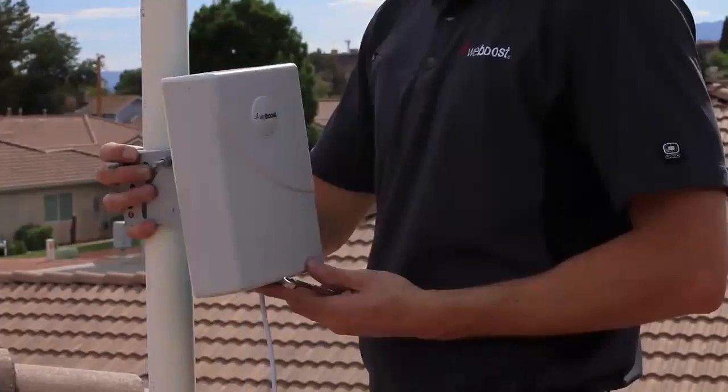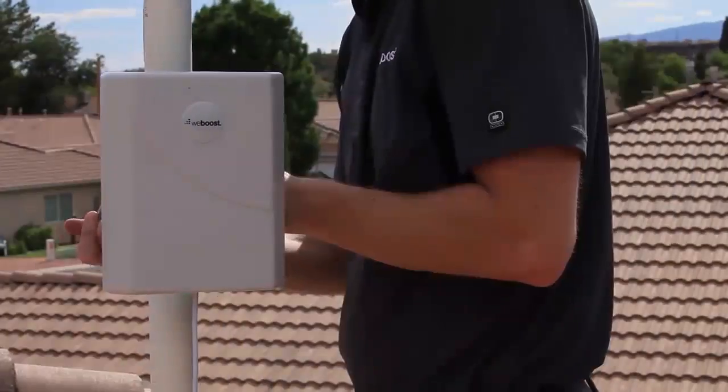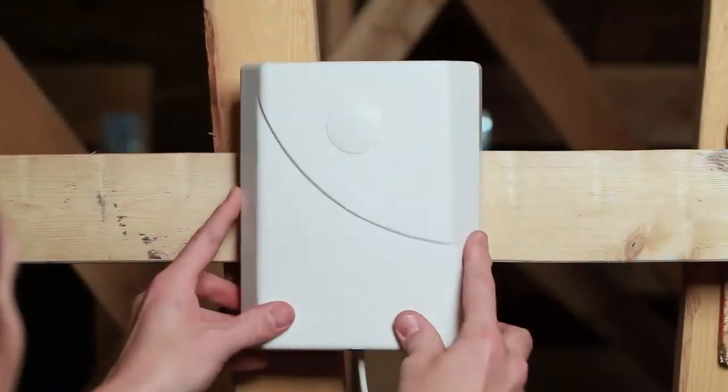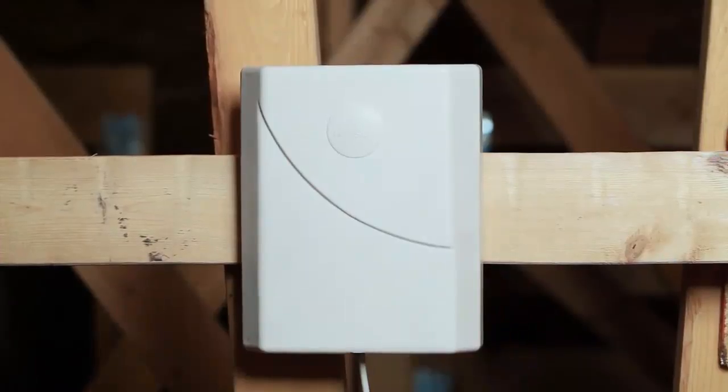To install your antenna in the attic, follow the same steps as if you were mounting it on the roof, but instead mount it to one of the rafters facing in the direction of the nearest cell tower. The antenna will function just fine and it will work like normal.